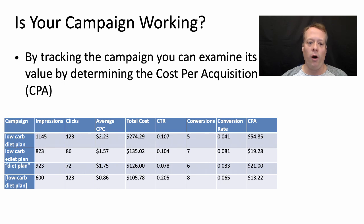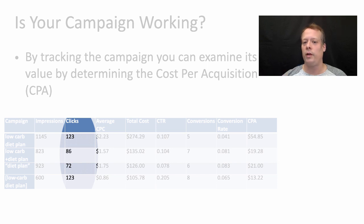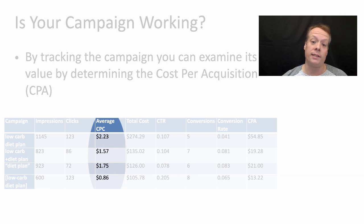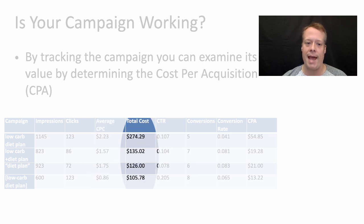We have four different sets of key phrases here: low-carb diet plan, low-carb plus diet plan, diet plan in quotes, and low-carb diet plan exact match. What we can do is look at the impressions we get through each of those, the clicks we get for each of those, and Google AdWords will tell us our average cost per click. Or it'll tell us our total cost for that campaign, in which case we can figure out our average cost per click by dividing one by the other. We can then put together the total cost of that ad for all the impressions that we saw.